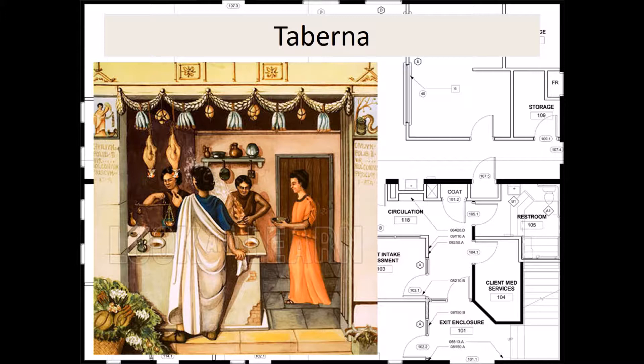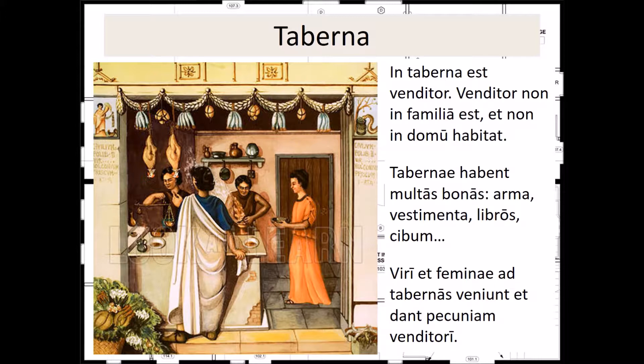First, our first room in a typical Roman Domus is the taberna. In taberna est venditor. Venditor non in familia est et non in domu habitat. Tabernae habent multas bonas: arma, vestimenta, libros, cibum. Viri et feminae ad taberna sveniunt et dant pecuniam venditori. Go ahead and pause the video and jot down what you think this room is.